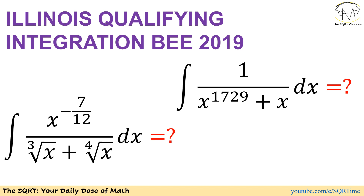In the first one I have the integral of 1 over x to the power of 1729 plus x dx, and for the second one I have the integral of x to the power of negative 7 over 12 over the third root of x plus the fourth root of x dx.